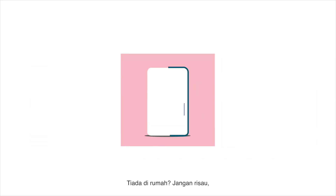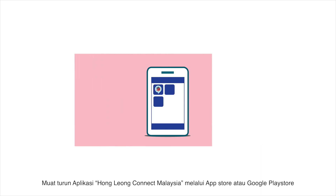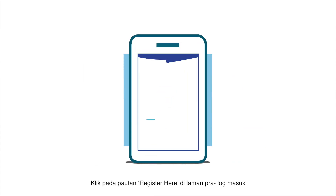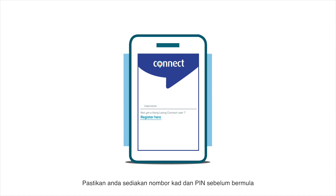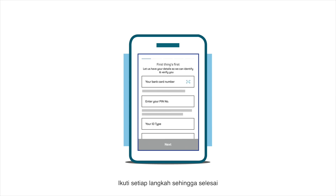Not at home? Don't worry. You can now register through the Connect app on your phone. Download the Hongliang Connect Malaysia app from the App Store or Google Play Store. Launch the app and click on the Register Here link at the pre-login page. Be sure to have your card number and PIN ready before you start, then follow the step-by-step instructions to the end.